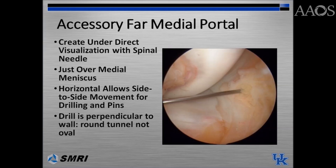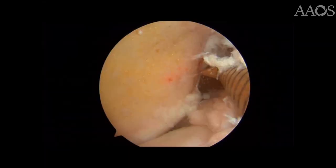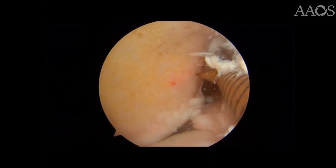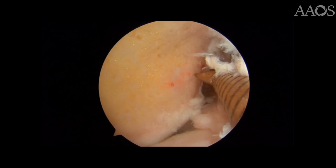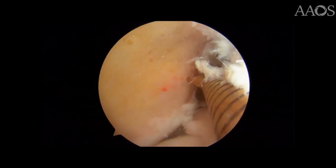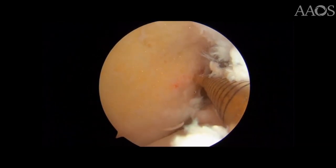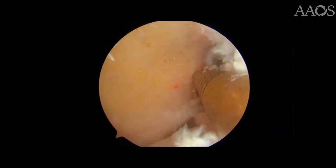It is also crucial to ensure that the drill is perpendicular to the wall in order to create a round as opposed to an oval tunnel. A 45-degree microfracture awl is placed through the far medial accessory portal to create a starting point for the femoral tunnel.